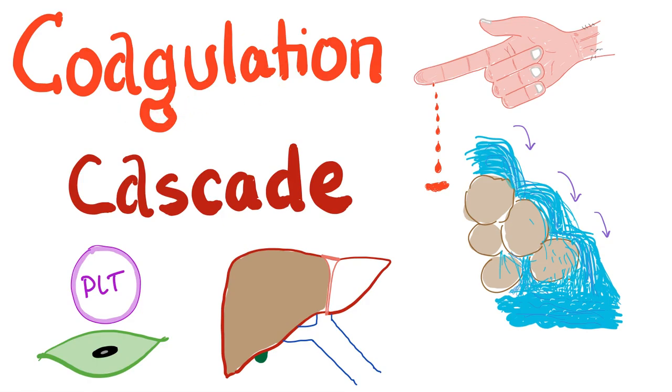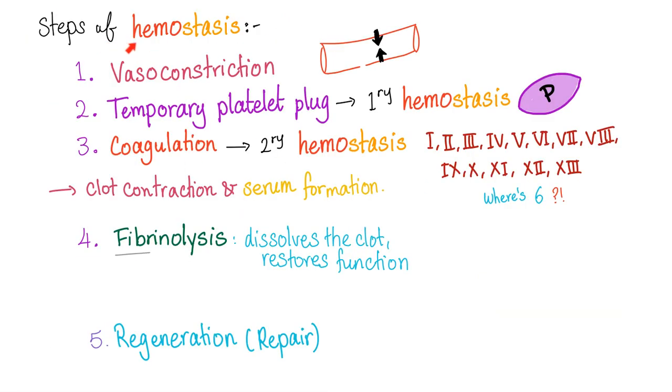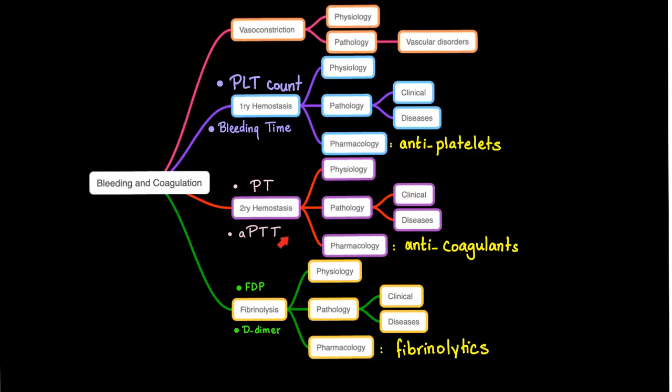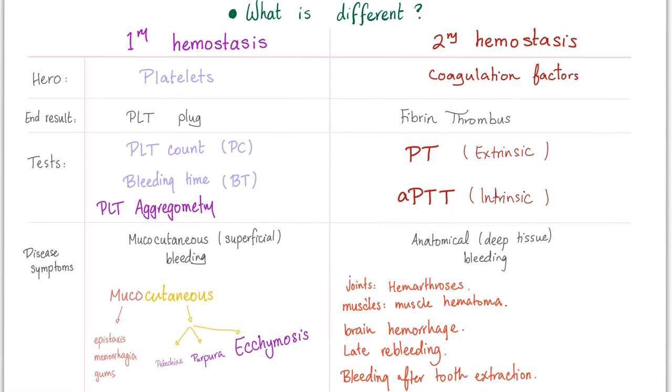Please watch my previous video on the coagulation cascade before watching this one. As you know, hemostasis has many steps. Today we're talking step number 3, the coagulation. The secondary hemostasis thanks to the coagulation factors. Here is secondary hemostasis and we're talking physiology. What are the names and the numbers and the functions of the coagulation freaking factors?